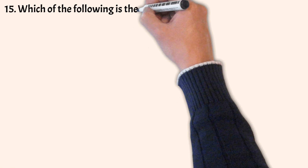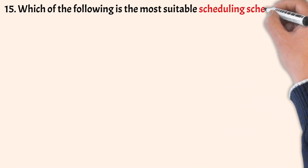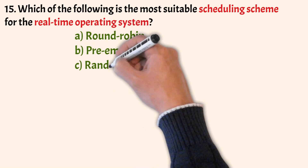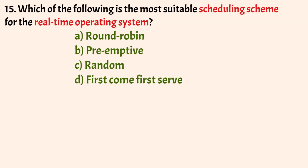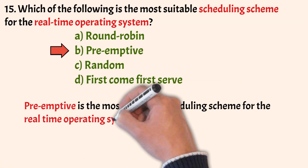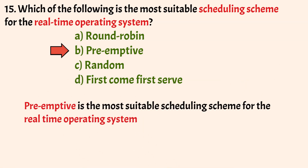Which of the following is the most suitable scheduling scheme for a real-time operating system? Options: Round Robin, Preemptive, Random, First Come First Serve. The correct answer is Option B, Preemptive. Preemptive is the most suitable scheduling scheme for real-time operating systems. A real-time system requires producing results urgently, and preemptive scheduling allows a real-time process to preempt a process currently running in the kernel.